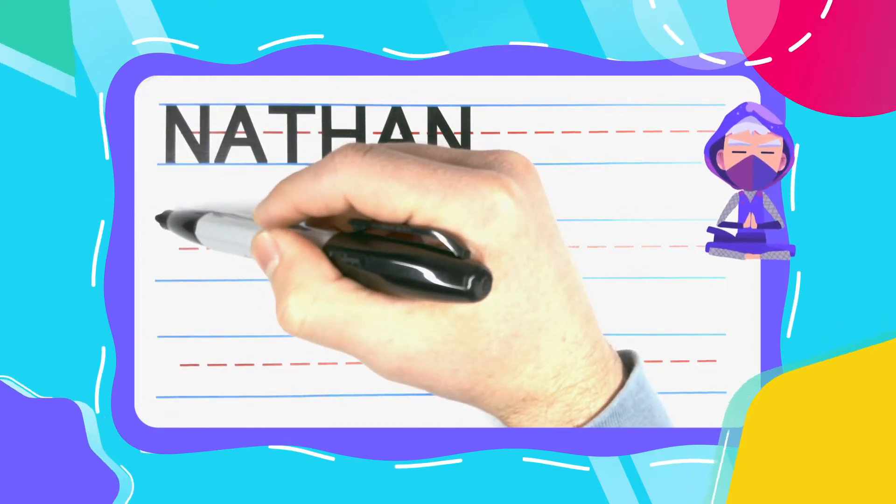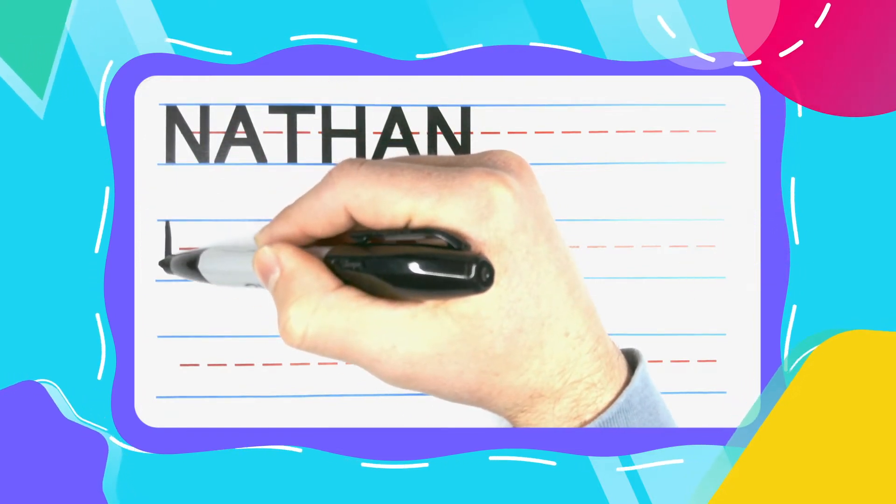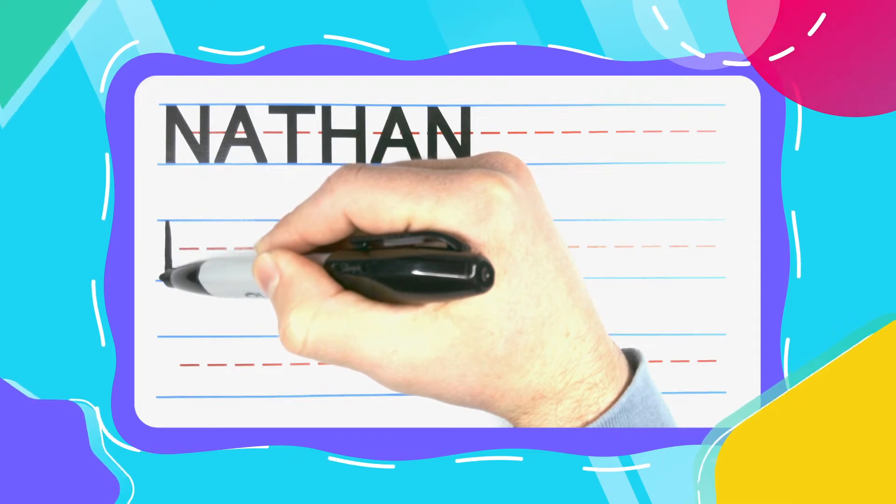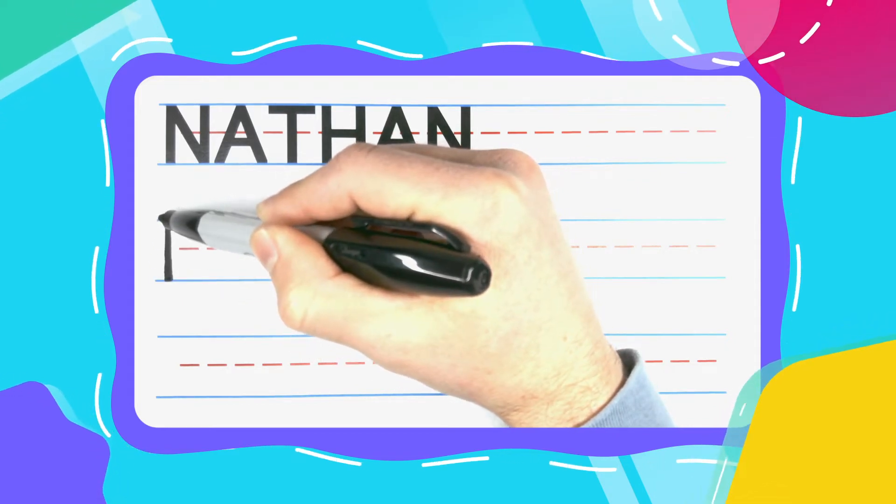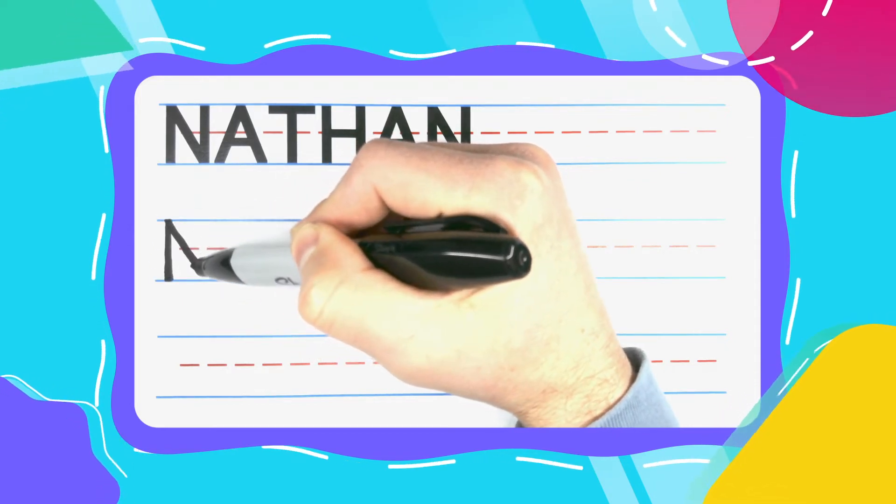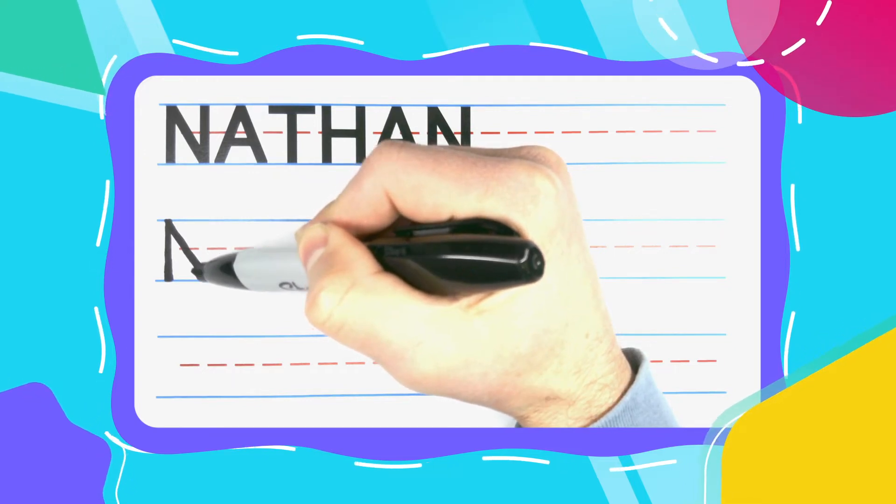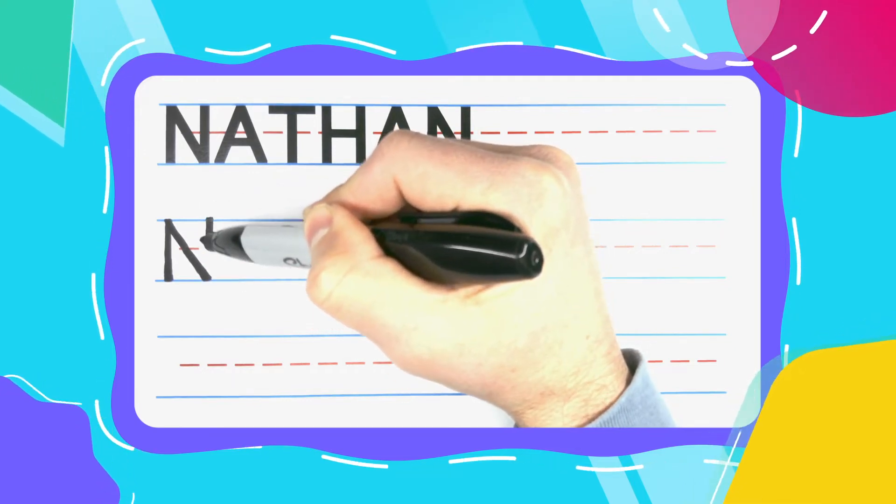N's start by going straight up and down. Come back to the top, then diagonal your way down to the bottom. Pick your pen up again, and come straight down.